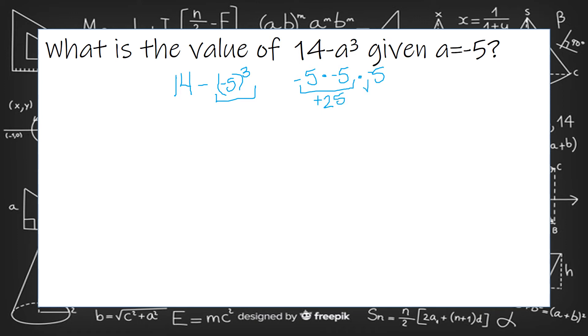Now I can bring this one down and finish out. 25 times negative 5, so 25 times 5 is 125, and a positive times a negative is a negative.